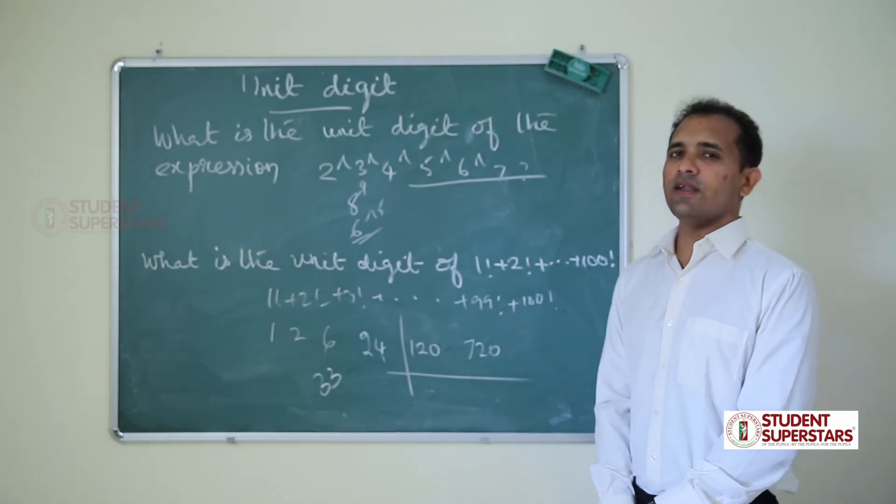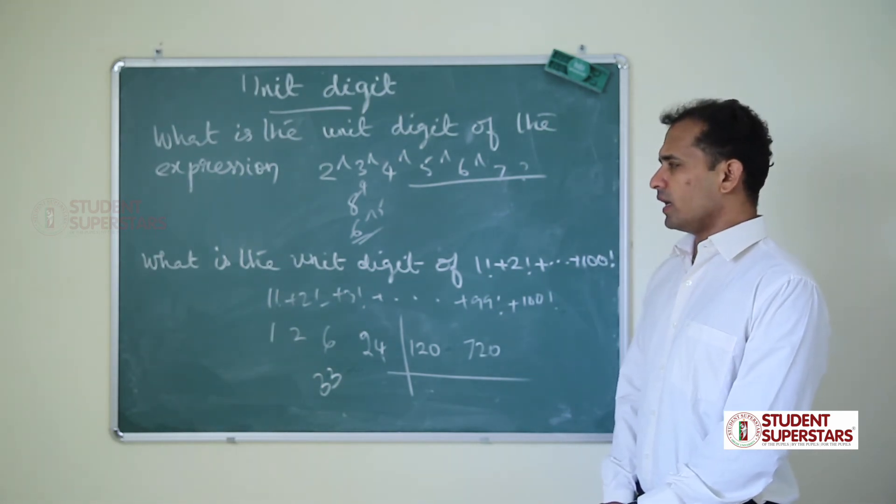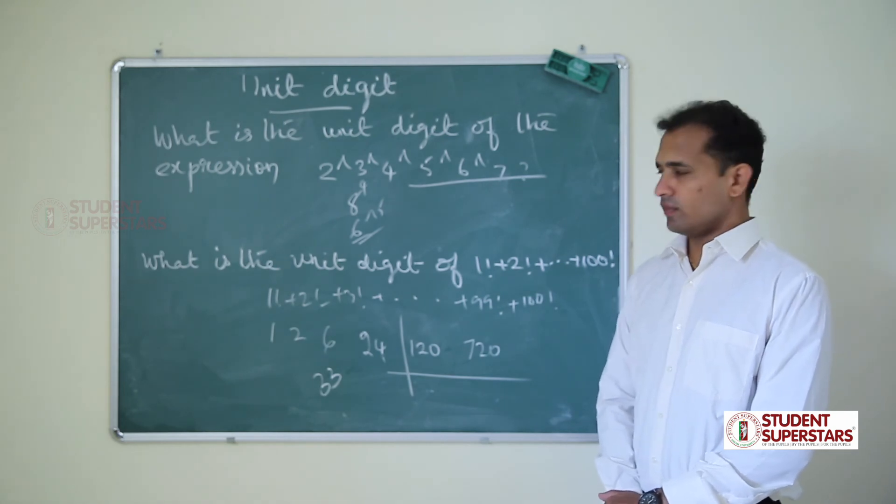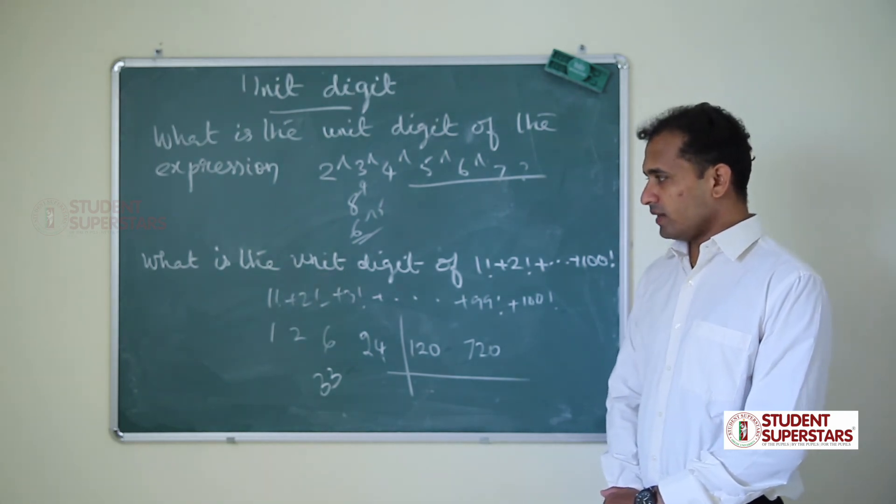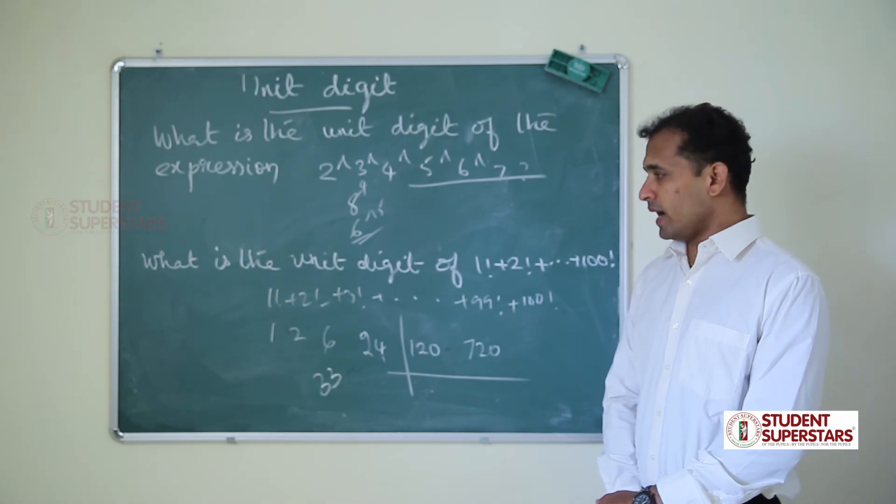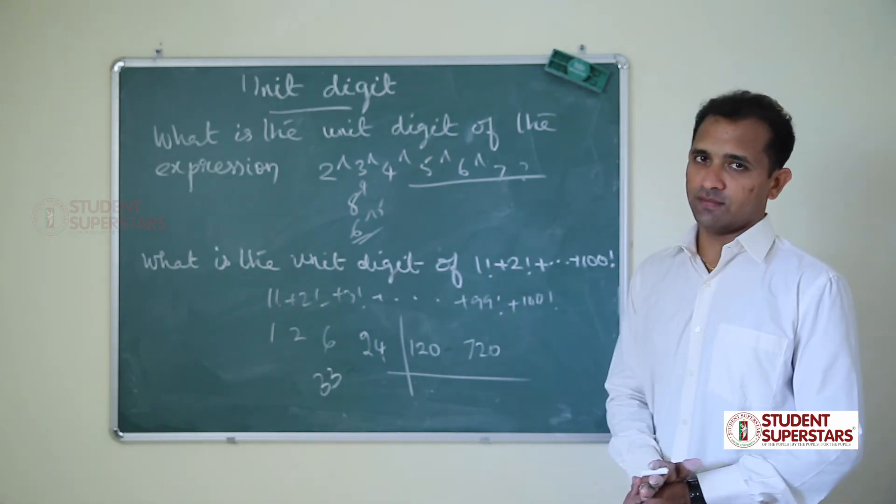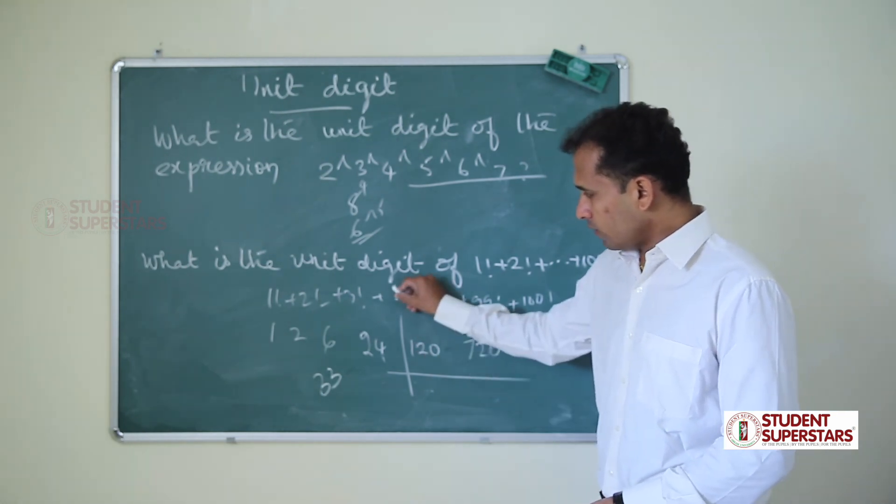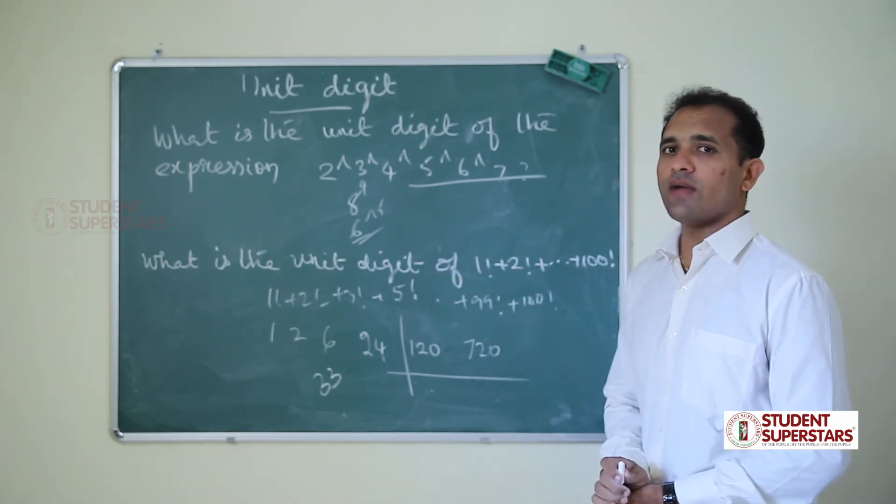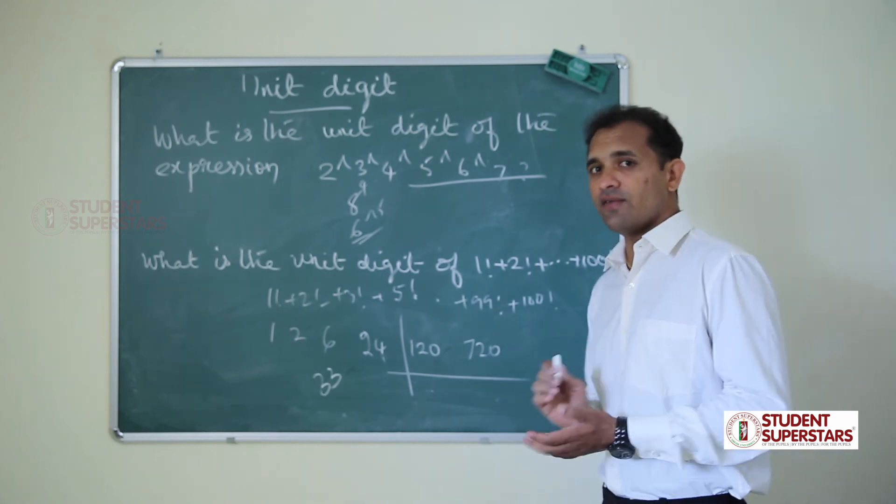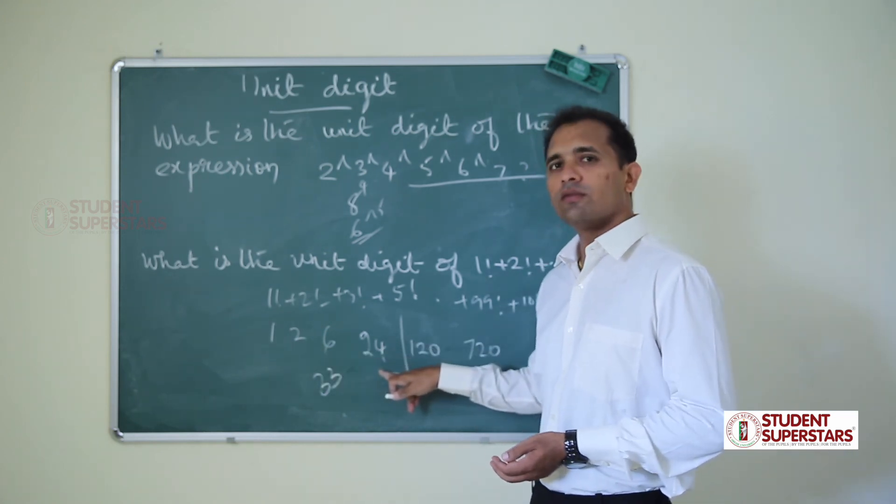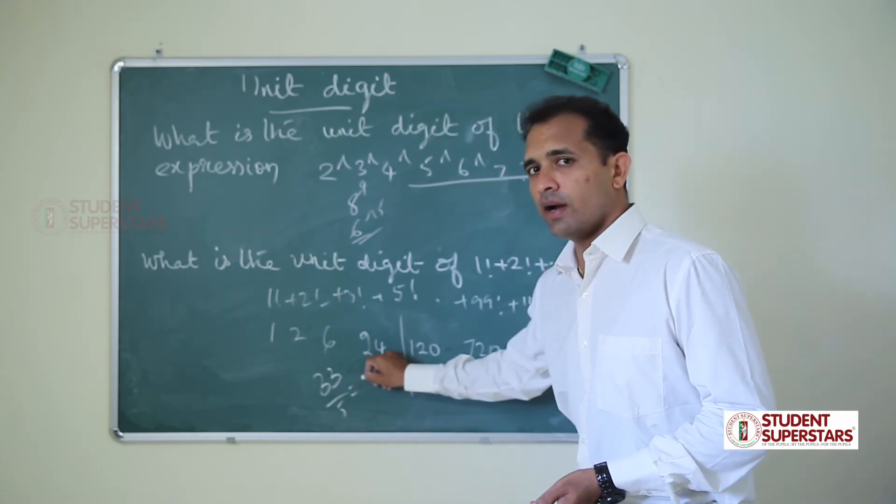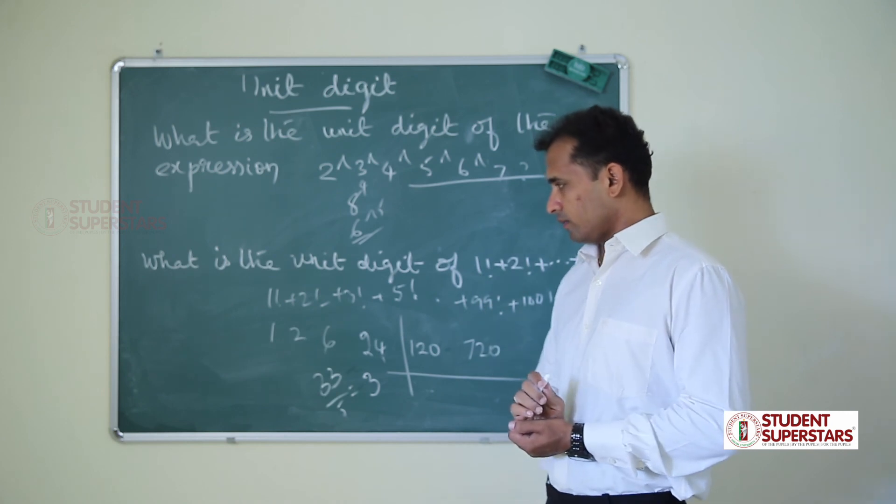The same question they ask in different ways. What is the remainder of this series if it is divided by 5? That is the same. After 5 factorial, all factorial values have 5 in it. So again we have to take 1, 2, 3, 4 factorial. 33 by 5, remainder is 3.